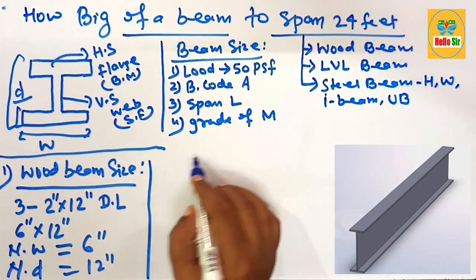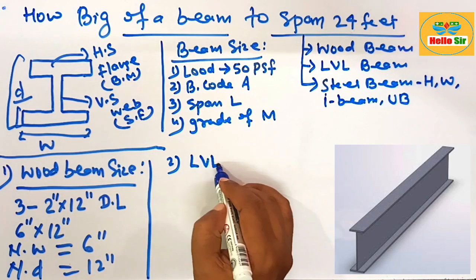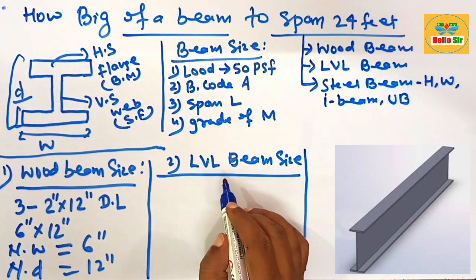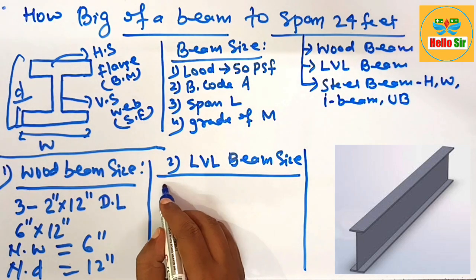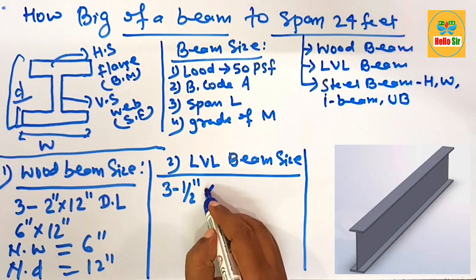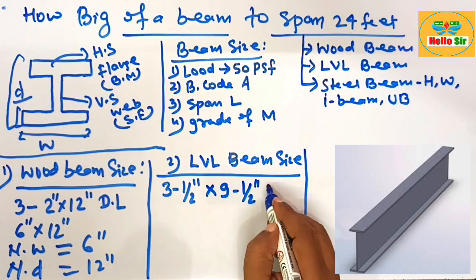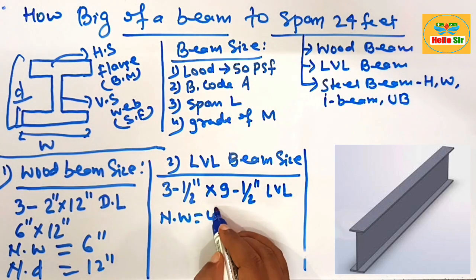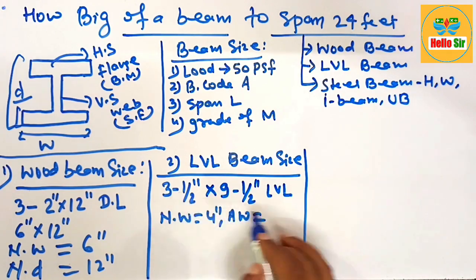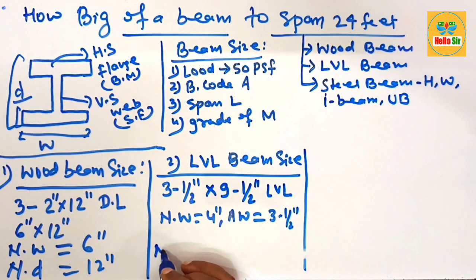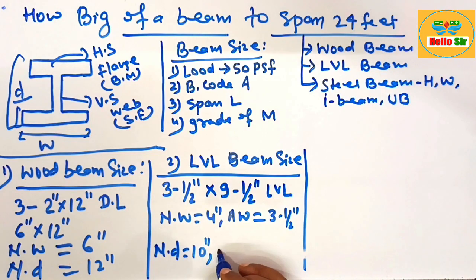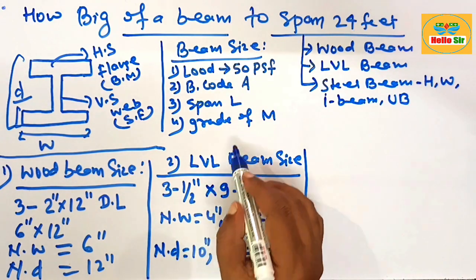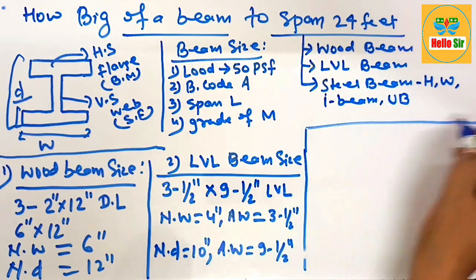For the LVL (laminated veneer lumber) beam size required to span 24 feet, you can use a double ply of 3.5-inch by 9.5-inch LVL beam. The nominal width is 4 inches and the actual width is about 3.5 inches. The nominal depth is about 10 inches and the actual depth is about 9.5 inches.